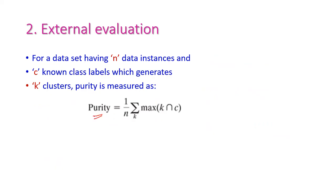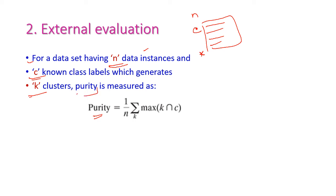For evaluating the purity of a cluster, the dataset has n data instances, c given classes, and we need to generate k number of clusters. Purity is measured as: Purity = (1/n) × Σ max(k, c). The difference between k and c should be very less — then only we can accept this clustering algorithm as performing well. Otherwise the performance will be very poor.